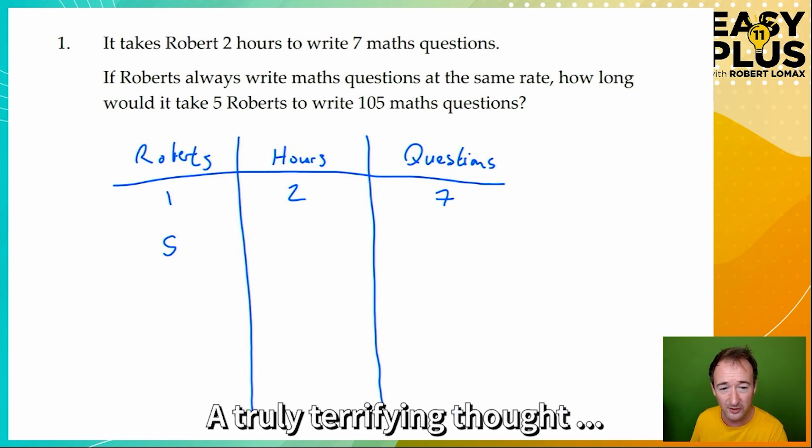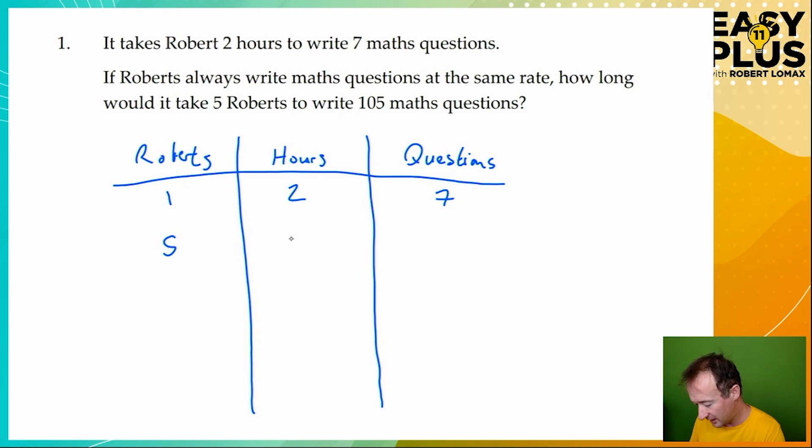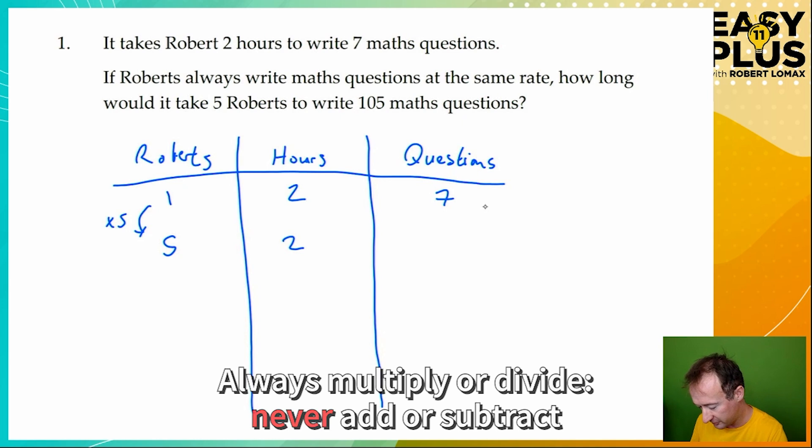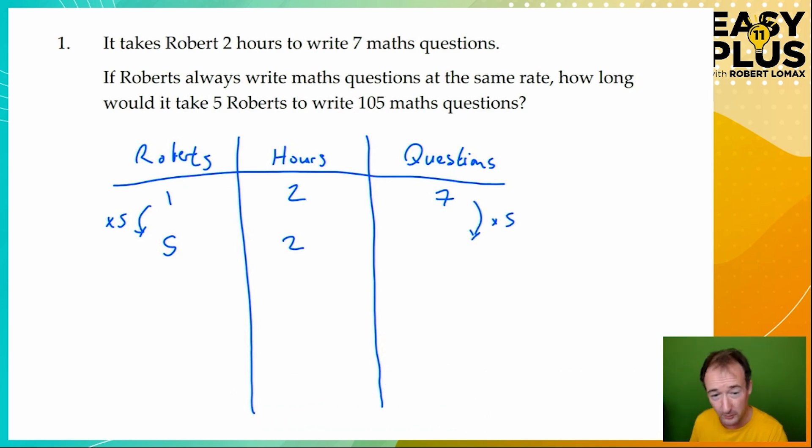So we need to change either the number of questions or the number of Roberts. Getting from one Robert to five Roberts is pretty simple, so let's do that. We now have five Roberts. Let's see how many questions these five Roberts could write in the same amount of time. So we've increased the number of Roberts five-fold, so they're going to produce five times as many questions. And seven times five is 35.